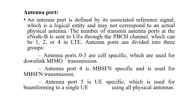Antenna port is defined by its associated reference signal, which is a logical entity and may not correspond to any actual physical antenna. The number of transmit antenna ports at the E-Node is sent to UEs through the PBCH channel, which can be either 1, 2, or 4 in LTE. The antenna ports are divided into three groups: antenna ports 0 to 3 are cell-specific and used for downlink MIMO transmission; antenna port 4 is for multicast or broadcast single frequency network specific and used for MBSFN transmission; antenna port 5 is user-equipment specific and used for beamforming to a single UE using all physical antennas.